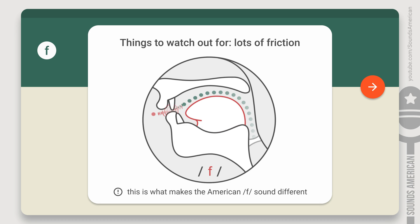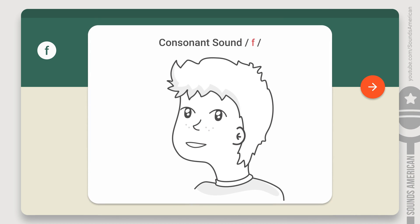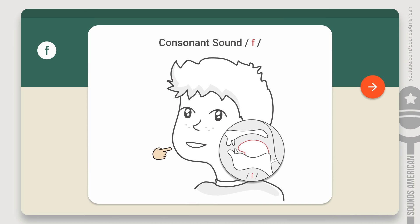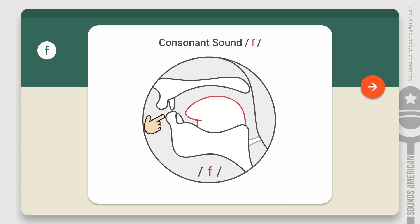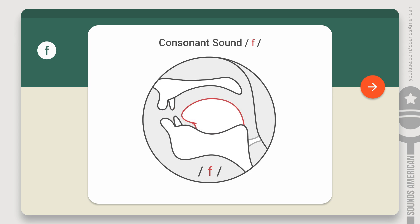Let's find out how they do it. To make the F sound correctly, focus on the position of your lips and teeth. First, lightly bite your lower lip. Make sure you do it gently, and leave a tiny gap between your lip and your teeth. Now, release a stream of air through that gap, creating lots of friction. The air should flow over your lip. Remember, the F is a continuous sound, so you should be able to stretch it out.